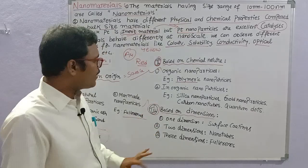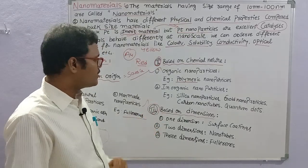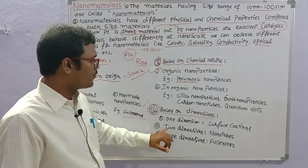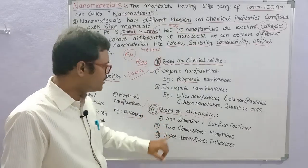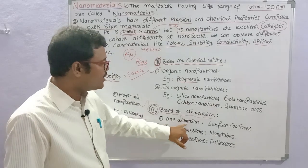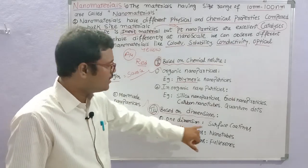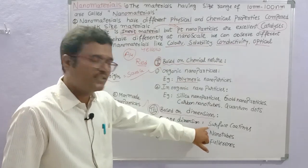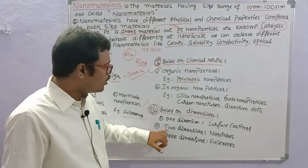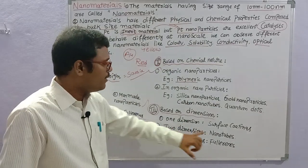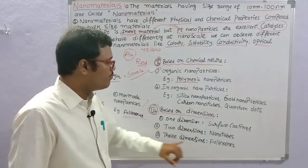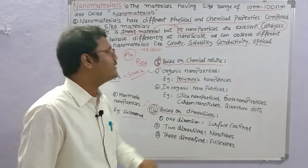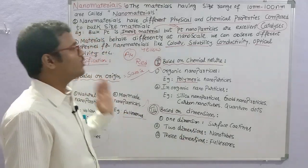The third classification is based on dimension: one-dimension, two-dimension, and three-dimension. One-dimensional nanomaterials include surface coatings as an example. Two-dimensional nanomaterials include nanotubes as an example. Three-dimensional nanomaterials include fullerenes as an example.